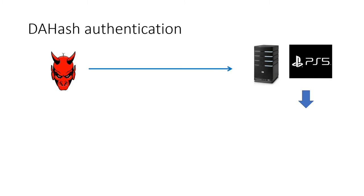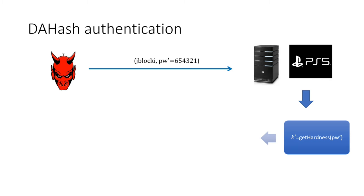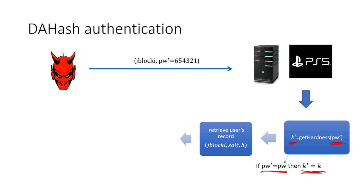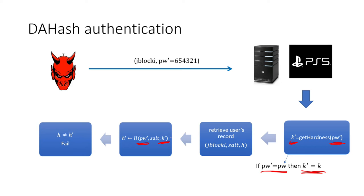For authentication, suppose an attacker tries to log in with the incorrect password 654321. PlayStation runs GetHardness on the input password to get a hardness parameter k prime — which may not match the original, and that's okay. If the password guess were correct, k prime would have to match since GetHardness is a deterministic function. The server retrieves the salt and stored hash, computes the hash of the password guess with salt and k prime, and checks if h prime matches. In this case it doesn't, so authentication fails — but if the password were correct, the hash would match and authentication would succeed.